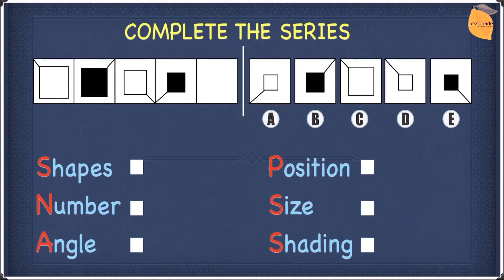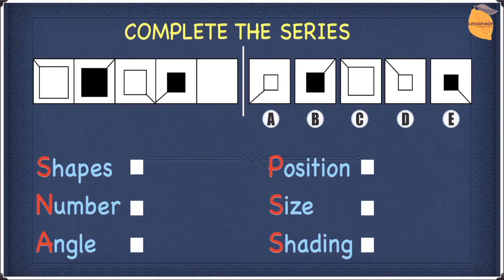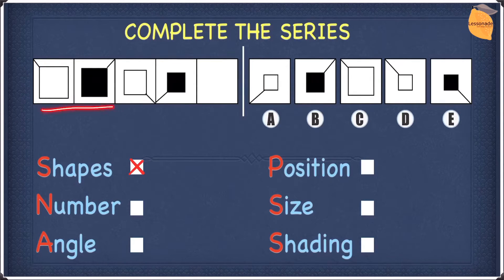For this example, we're going to use SNAPS to help us. In terms of shapes, we have a square and a line, and no new shapes are introduced, so shapes does not work. In terms of number, we have two shapes — a square and a line — and the number doesn't change throughout, so number doesn't work either.